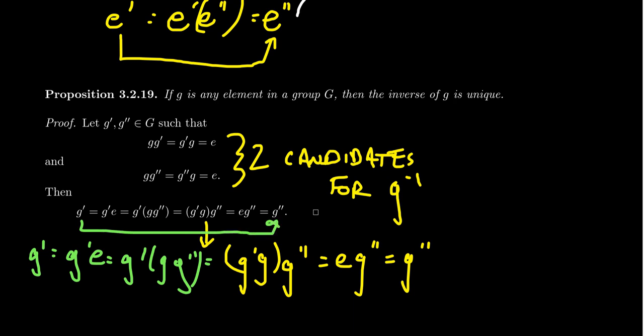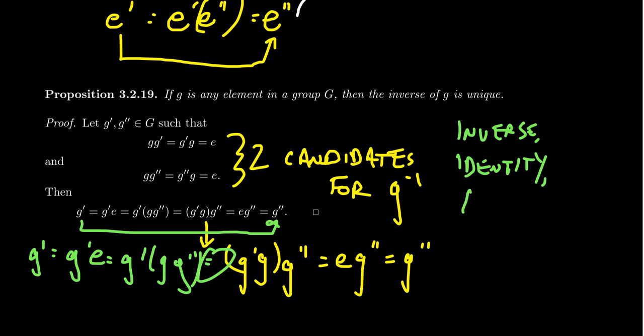Inverses are unique. This time we were using the inverse axiom to show existence, because to be unique means you have at most one but also at least one. The inverse axiom gives us the existence part. To use the inverse axiom, you have to have the identity axiom because the inverse axiom references the identity. If no identity exists, the inverse axiom becomes null and void. You can also see that the associativity axiom was necessary. So to prove the uniqueness of inverses, we used all three group axioms: associativity, identity, and inverses.